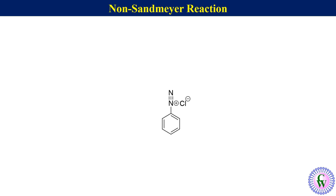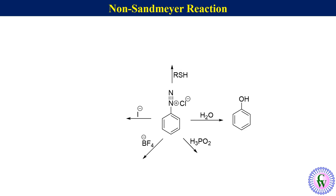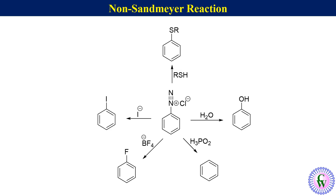Aryl diazonium salt in the absence of copper-1 salt can react with water, H3PO2, tetrafluoroborate, iodide salt, or thiol to produce phenol, arene, fluoroarene, iodoarene, and thioether respectively. Since these reactions don't require copper-1 salt, they are called non-Sandmeyer reactions.